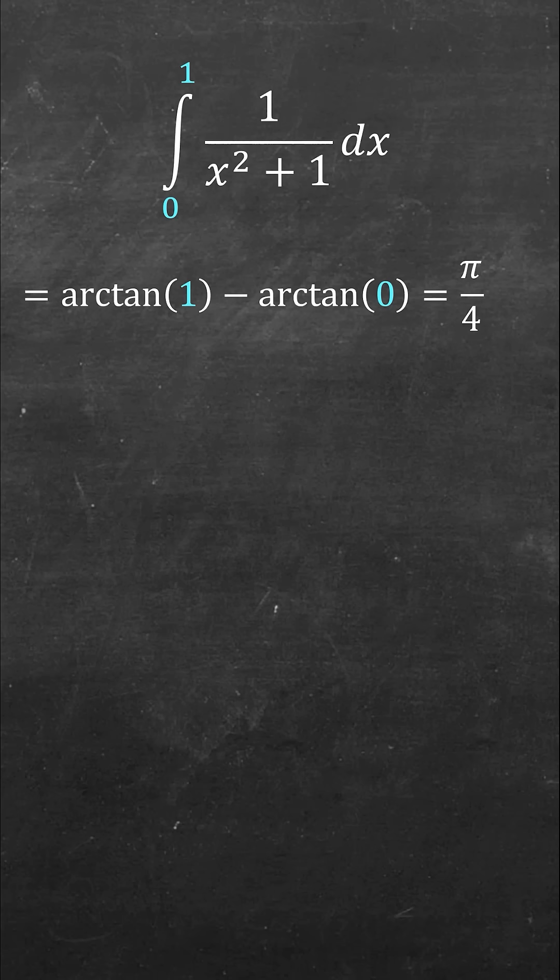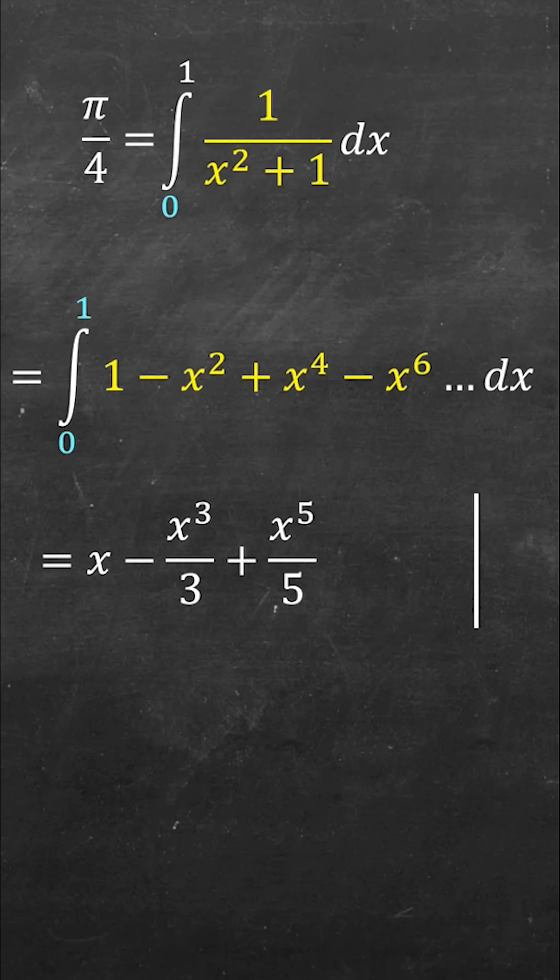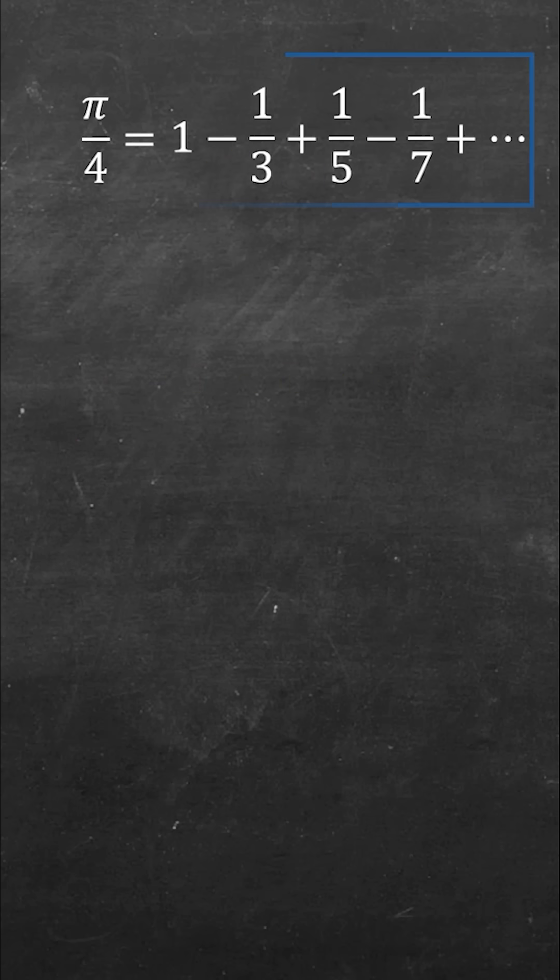But if instead we had looked at the inside and expanded using geometric series to give 1 minus x squared plus x fourth minus x to the sixth and so on, then integrate term by term, evaluate it at 0 and 1, and you get this series 1 minus 1 third plus 1 fifth minus 1 seventh and so forth. This is a series expansion for pi.